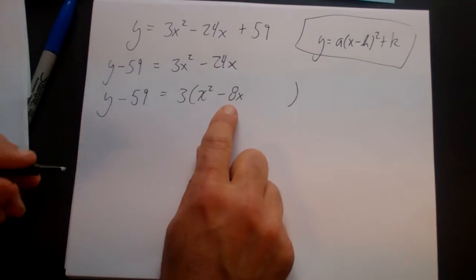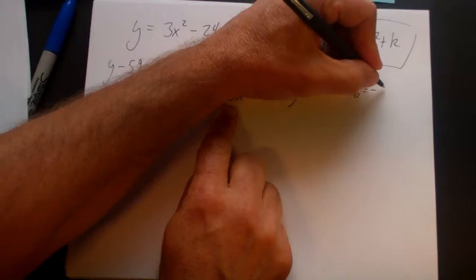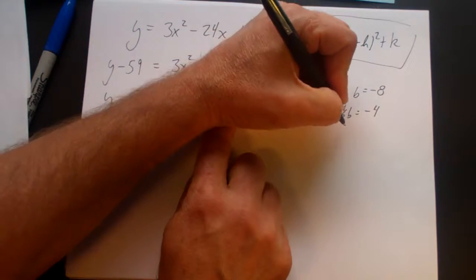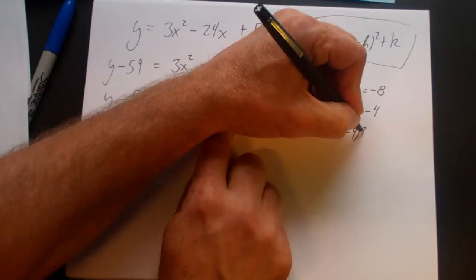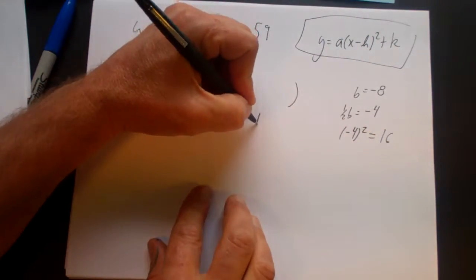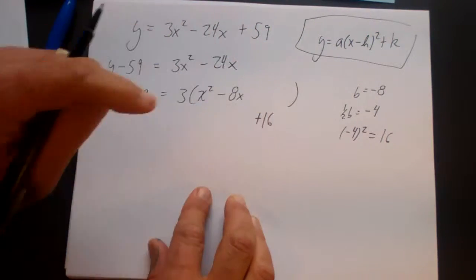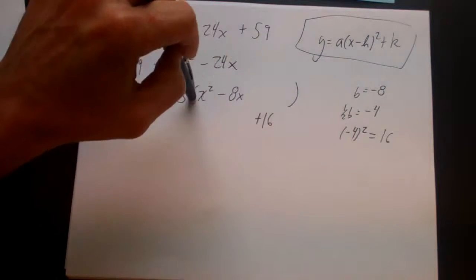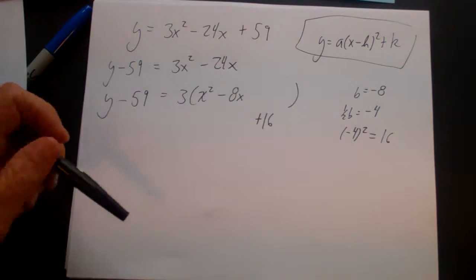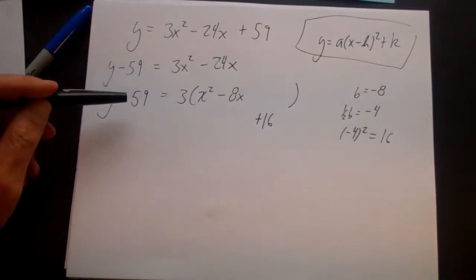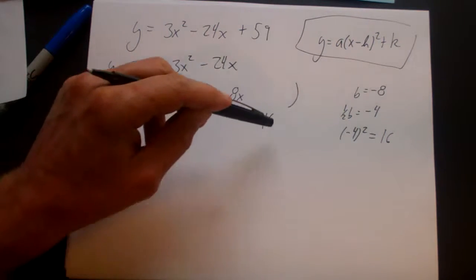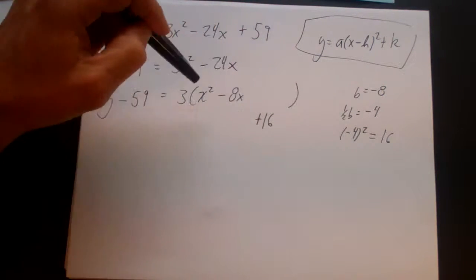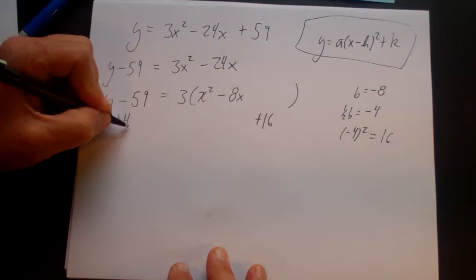So we're going to take b. b is minus 8. We're going to half it. One half of b is minus 4. And then we're going to square that. Minus 4 squared is 16. So I'm going to add a positive 16. I'm going to add it down here in case I make a mistake, I need to find my work. So that's completing the square right there. Now if I add 16 to this side, I have to do the same thing to this side. But I'm not actually adding 16. I'm adding 16 times 3, right? Because it's inside the parentheses and it's 3 there. So I'm really adding 48. So I have to add 48 to this side.